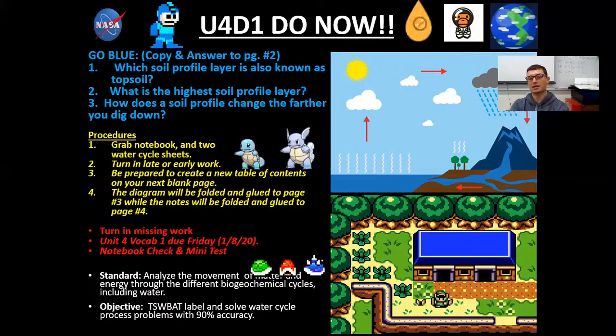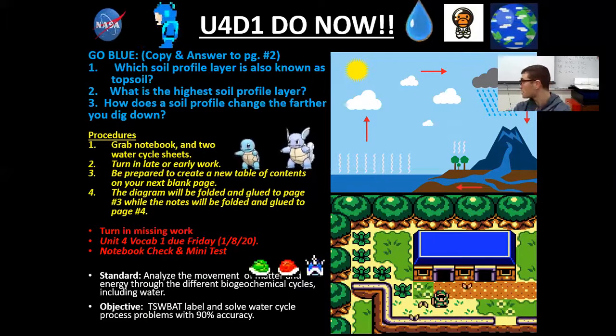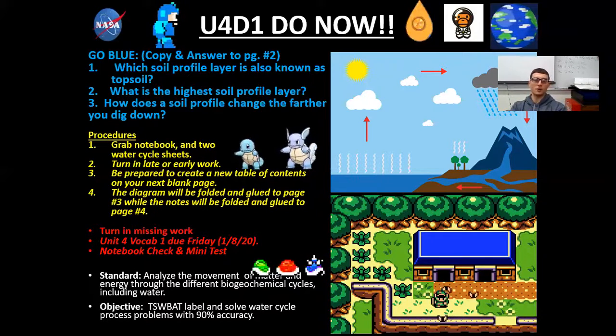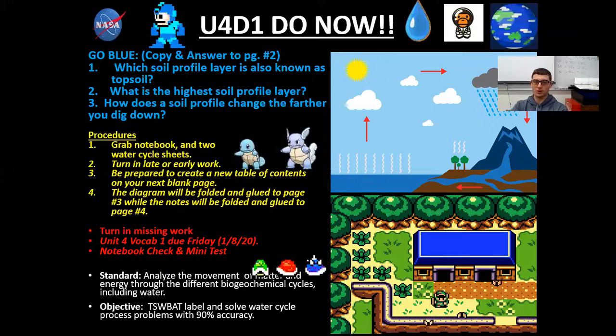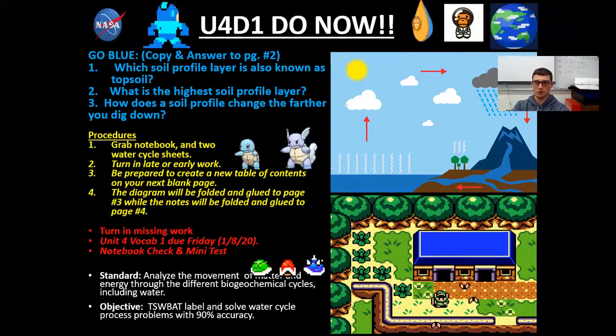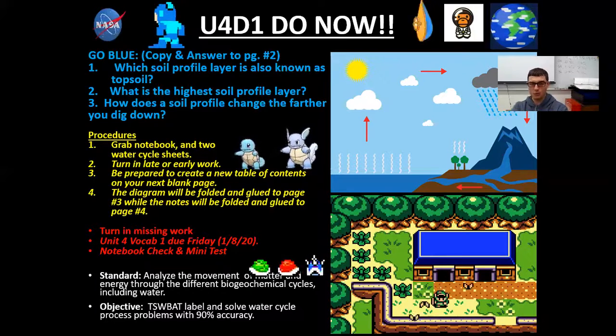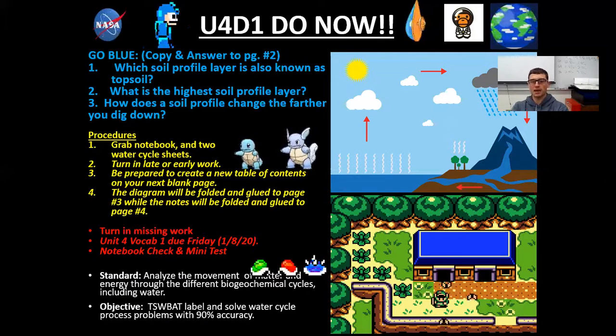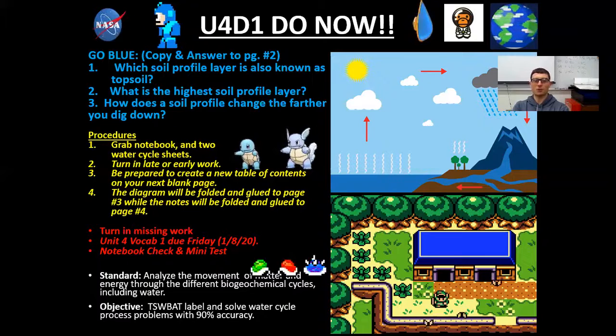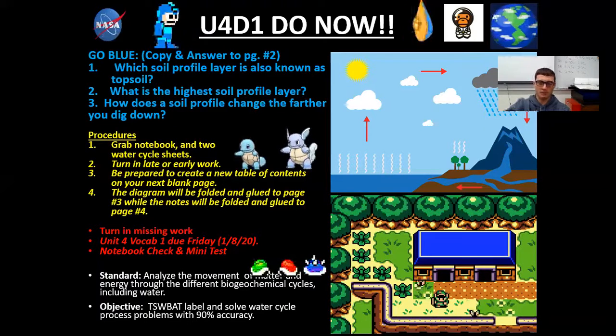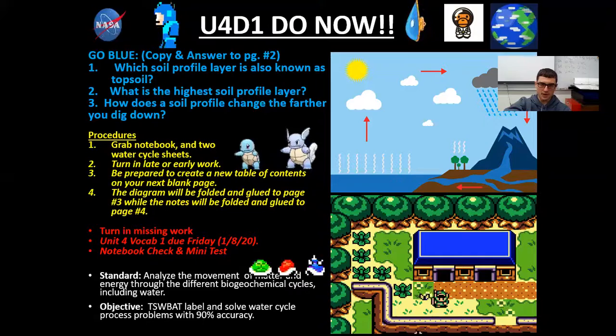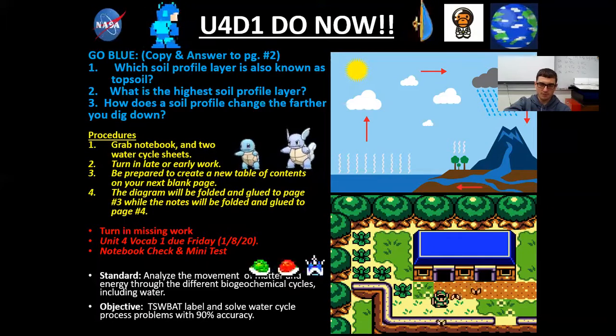Go to page two now. This is after we fill out the Table of Contents. Number one, which soil profile layer is also known as topsoil? This is going to be on page 21 from our most recent unit. And then number two, what is the highest soil profile layer? And number three, how does a soil profile change the farther you go down? Let's go ahead and check those out. Pause the video. Answer those. Write those down. When you're ready, press play.